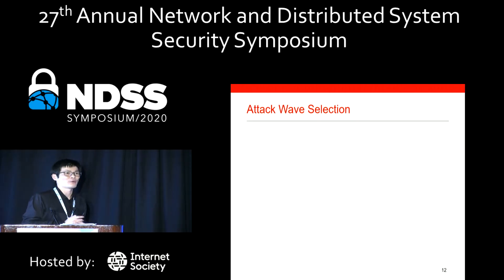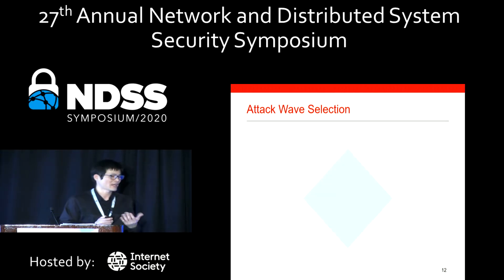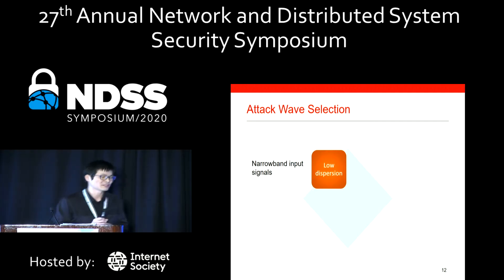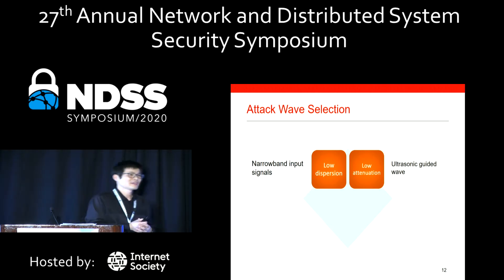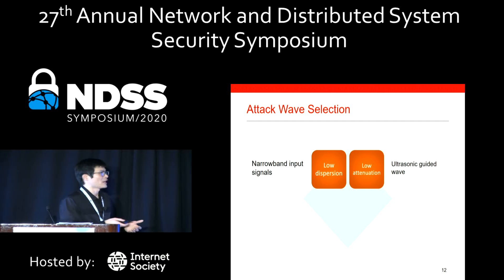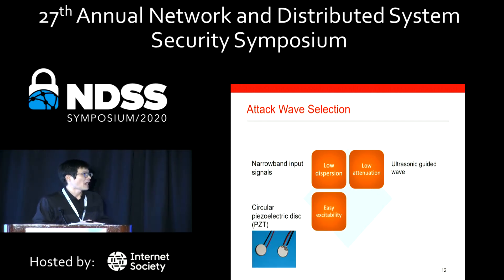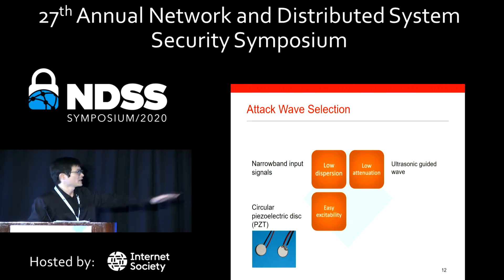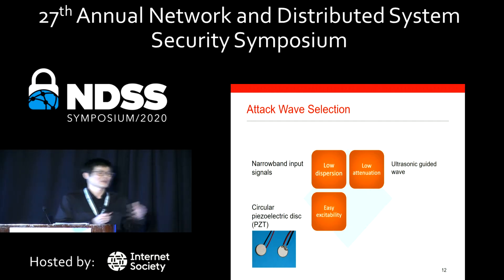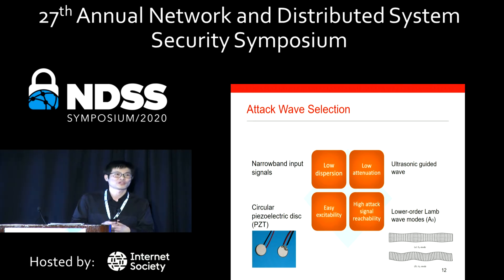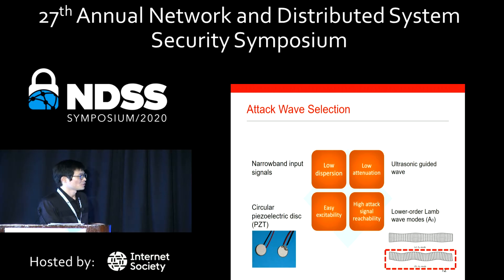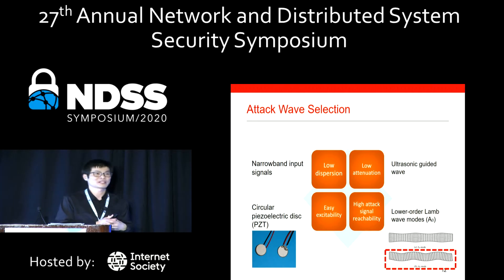We need to select a good attack wave to launch our inaudible attack. First, we want low dispersion — we want to minimize the number of component frequencies dispersed by the medium, and narrow-band input signals are perfect for restricting wave dispersal. Second, we want low attenuation; for certain materials, ultrasonic guided waves can achieve very low attenuation. Third, we want the attack to be easily accessible, so we use off-the-shelf circular piezoelectric disks, which are very cheap at only $5. We use a lower-order Lamb wave, A0, which has higher displacement toward the surface of the table to generate a stronger signal to reach the device.